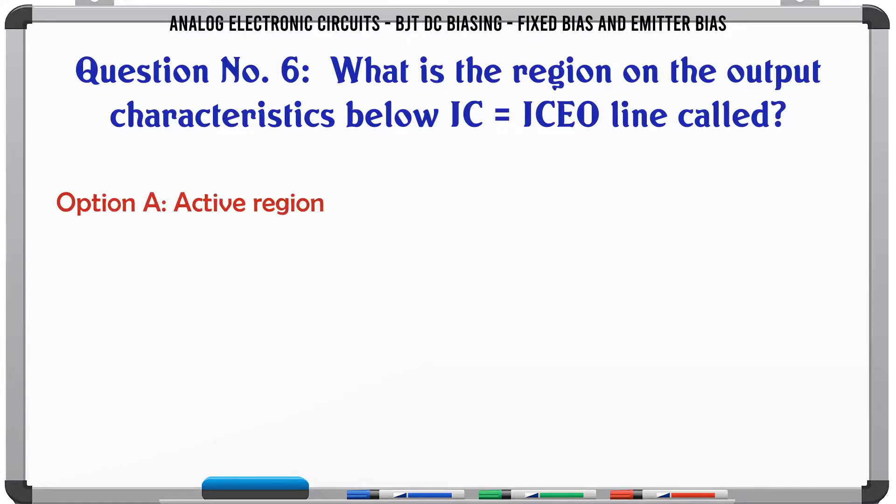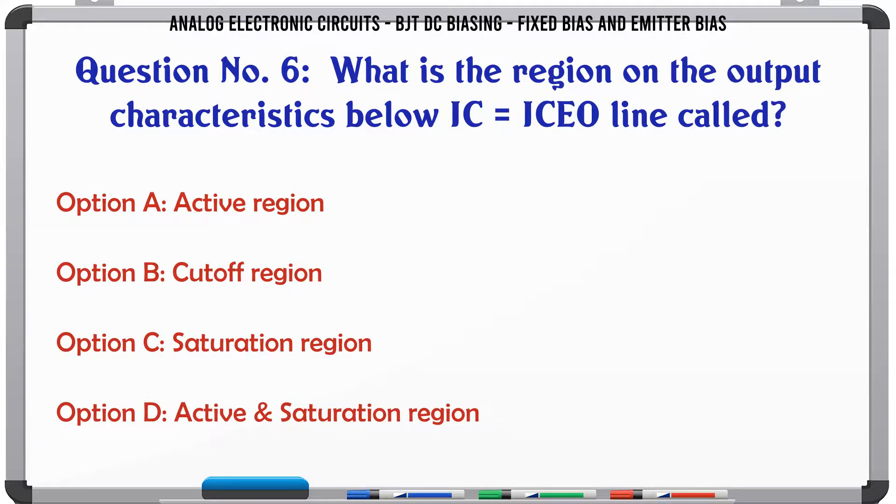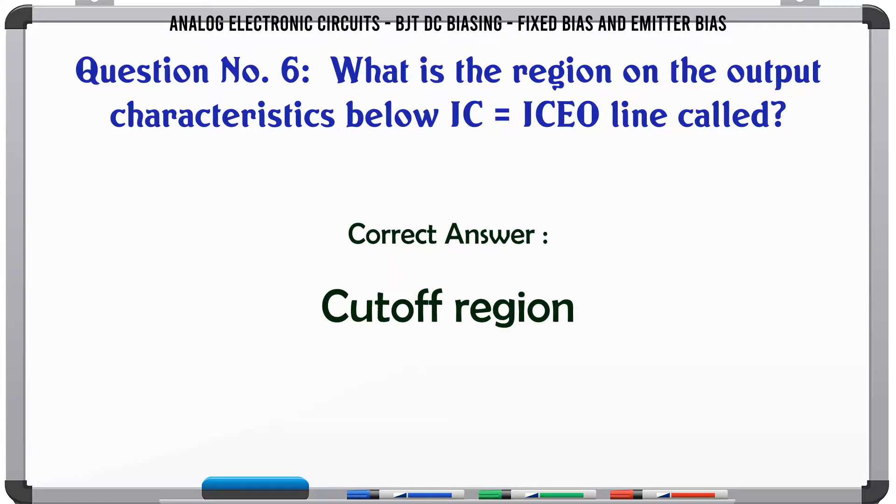What is the region on the output characteristics below IC = ICEO line called? A: active region. B: cutoff region. C: saturation region. D: active saturation region. The correct answer is cutoff region.